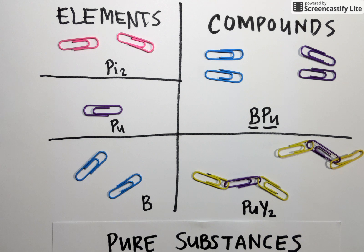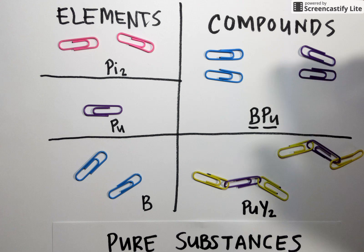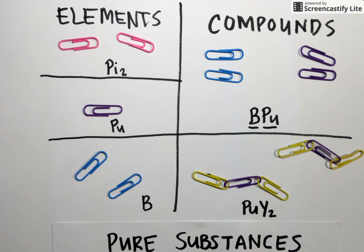So what distinguishes elements from compounds is the ability to be chemically separated. Compounds have the ability to be separated by chemical means, whereas elements do not have the ability to be separated by chemical means.